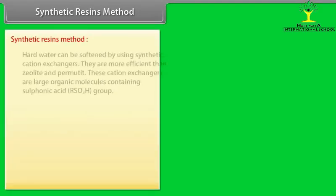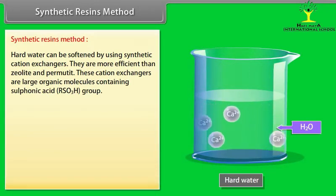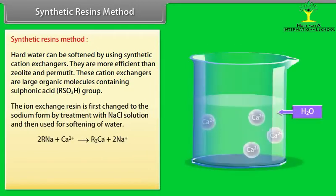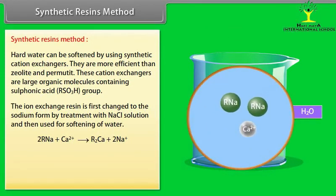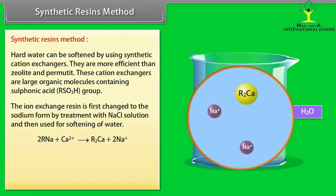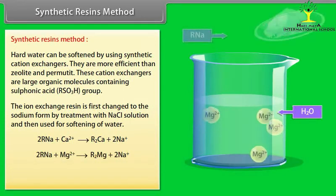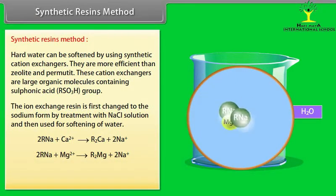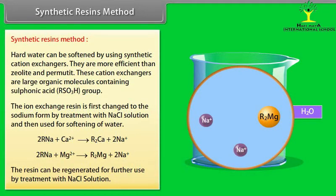Synthetic resins method: Hard water can be softened by using synthetic cation exchangers. They are more efficient than zeolite and permutate. These cation exchangers are large organic molecules containing sulfonic acid RSO3H group. The ion exchange resin is first changed to the sodium form by treatment with NaCl solution and then used for softening of water. The resin can be regenerated for further use by treatment with NaCl solution.